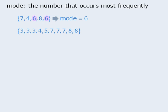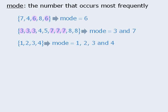In this set of numbers, we have a tie for the most frequently occurring number. The 3s occur three times, and the 7s occur three times. So the mode here is 3 and 7. Finally, in this set, each number occurs once. So the mode here is 1, 2, 3, and 4.